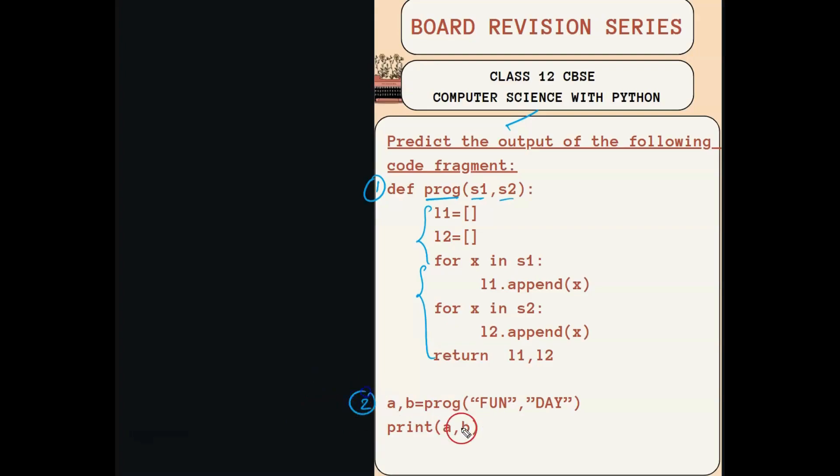Secondly, it will be executing the global statement. The global statement is the statement which is outside the function. So a and b are the variables which are assigned for FUN and DAY. a is for FUN and b is for DAY respectively.